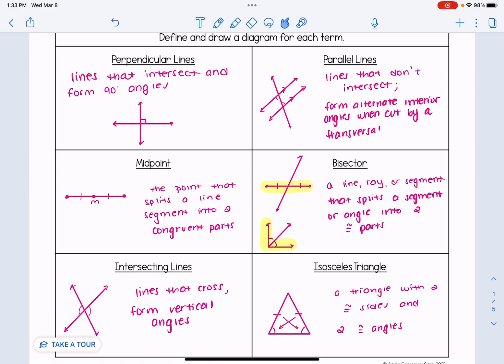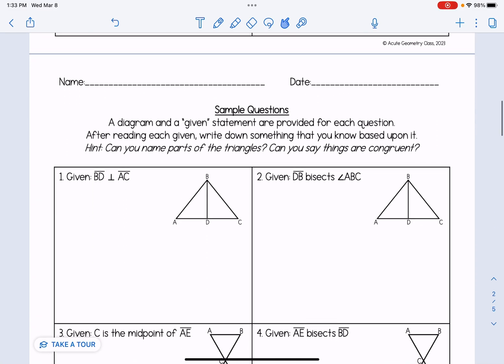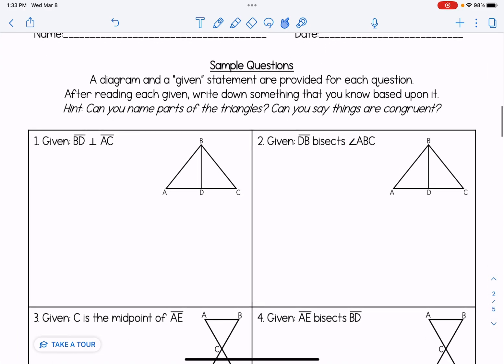Let's take a look at what some diagrams would look like for proofs. For each of these sample questions, a diagram and a given statement are provided. A given statement is quite literally just information the problem is giving you. After reading each given, we're going to write down something that we know based upon it. As a hint, can we name any parts of the triangles? Our ultimate goal is can you say things are congruent to one another? That's always going to be a key element of proofs.